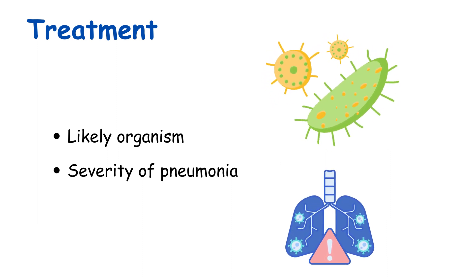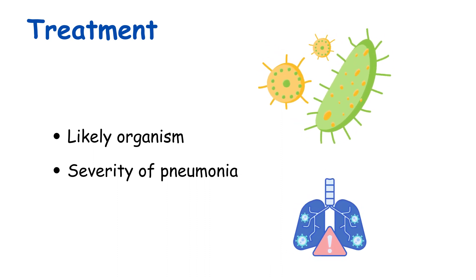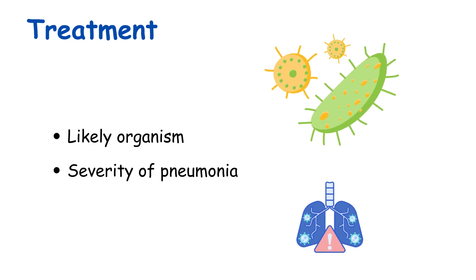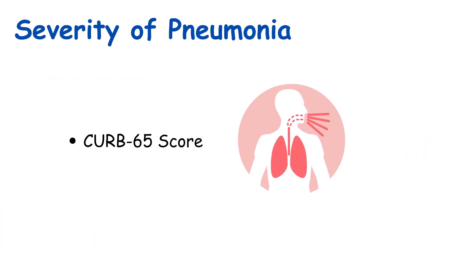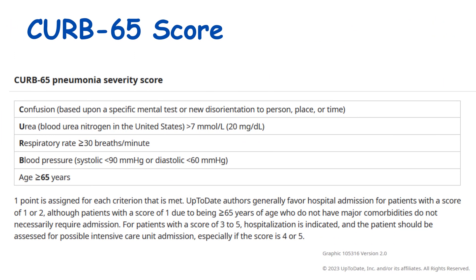Once diagnosed, the first step in treatment is to decide on the likely organisms, which will help start an appropriate antibiotic early. Next, we need to decide on the severity of the pneumonia and select the antibiotic appropriate to the severity. Risk stratification is based on clinical and biochemical parameters. A score commonly used is CURB-65, used as a guideline for admission, though it is rarely practical since blood urea results take at least five to six hours.